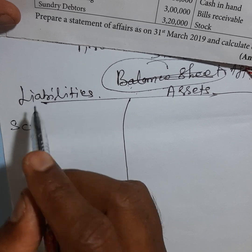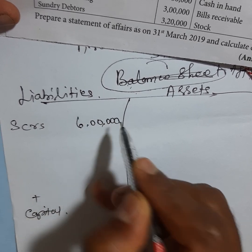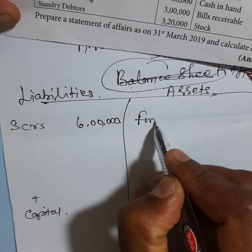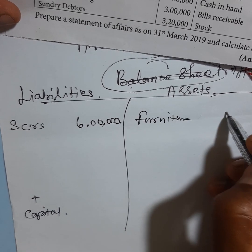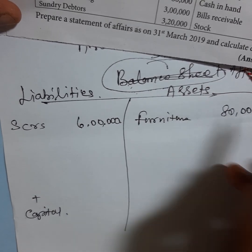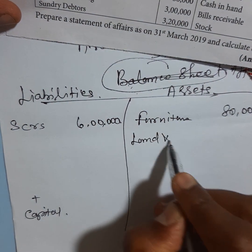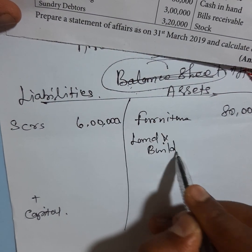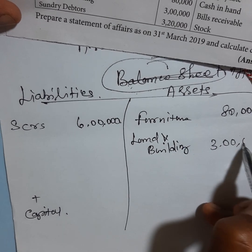Sundry creditors, amount of Rs. 6,00,000. Now for the furniture, we will do the assets — it costs 80,000. Next, land and building, so 3,00,000.